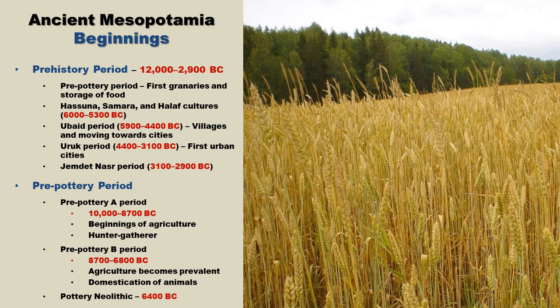The Pre-Pottery A period sees the first beginnings of agriculture, but there is still a heavy reliance on a hunter-gatherer diet. It isn't until the Pre-Pottery B period that domestication of animals becomes more prevalent, along with agriculture. After the Pre-Pottery B era, we enter the Pottery Neolithic, which began around 6,400 BC. Pottery is extremely important during the prehistoric period, as many civilizations are separated through differences in pottery — one of the primary artifacts uncovered through archaeology.